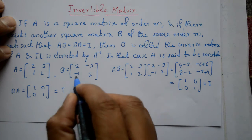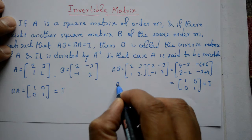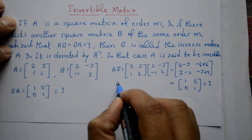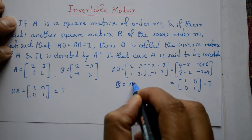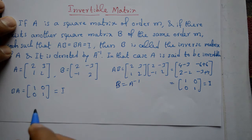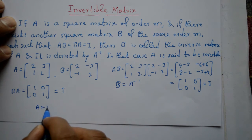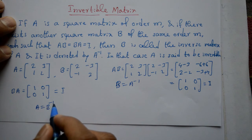Hum first ko yahan mention karenge, matrix B is equal to inverse of A hoga, A is invertible. Is case mein A is equal to inverse of B hoga, second case mein B is invertible.